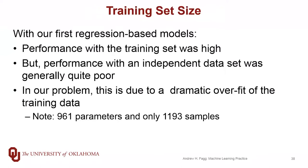The other question we want to get at is how much data do we really need? What we observed in the training we've done so far is that our performance on the training set tends to be quite good, whether we're predicting position or velocity. But when we move to an independent data set, performance is really quite poor. What's happening is that even our simple linear model is dramatically overfitting our training data. This comes from the fact that the number of parameters in our model is roughly equivalent to the number of samples in our training set. In practice, you want your training set size to be quite a bit larger than the number of parameters.